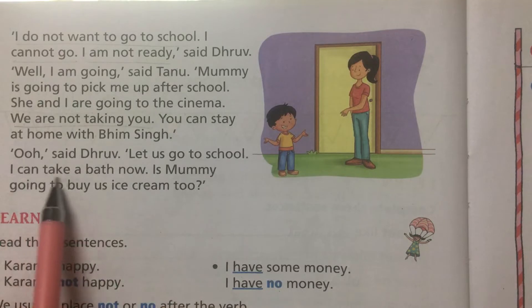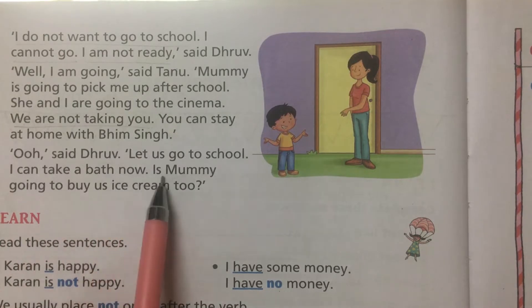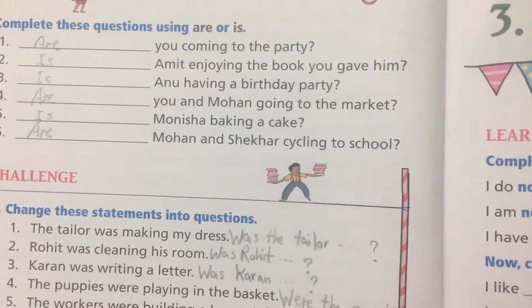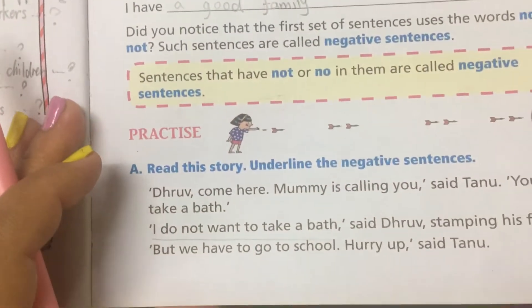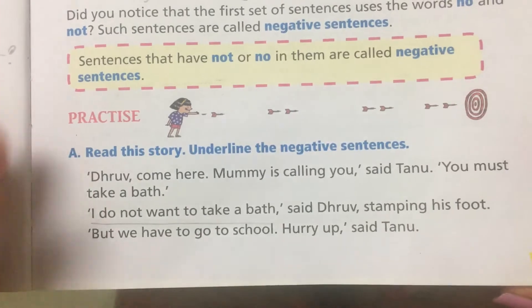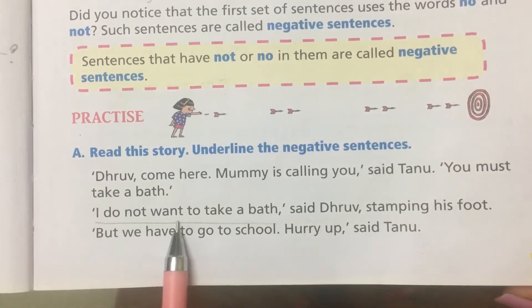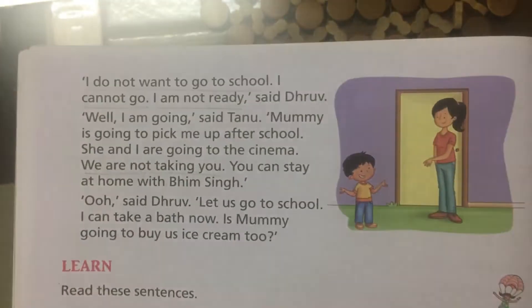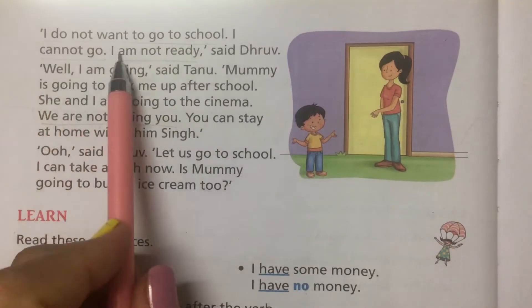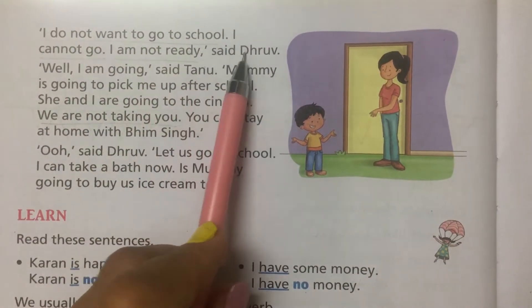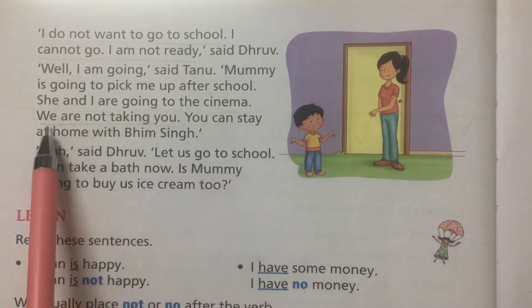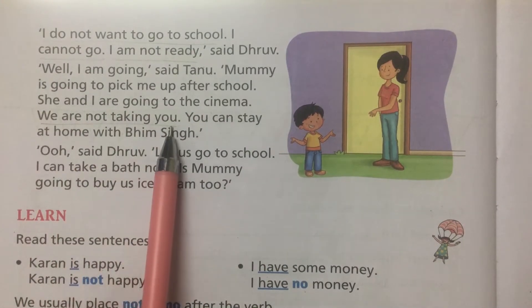We are not taking you. You can stay at home. Oh, said Drove. Let us go to school. I can take a bath now. Is Mummy going to buy us ice cream too? Now the negative sentences are: I do not want to take a bath. I do not want to go to school. I cannot go. I am not ready. We are not taking you.